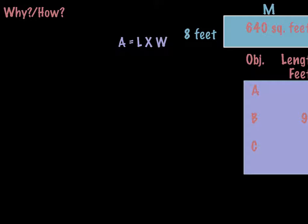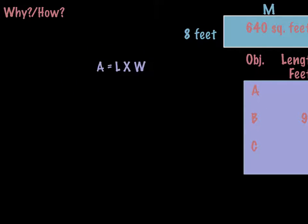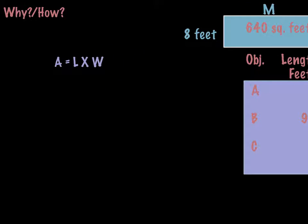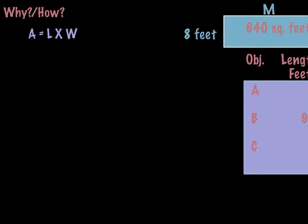One of the important things that we need to remember is this magic formula right here: A equals L times W. Area equals length times width. Now this works only with rectangles and squares, so we need to keep that in the back of our minds.